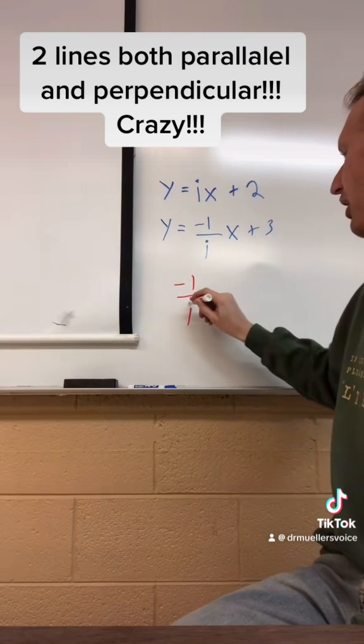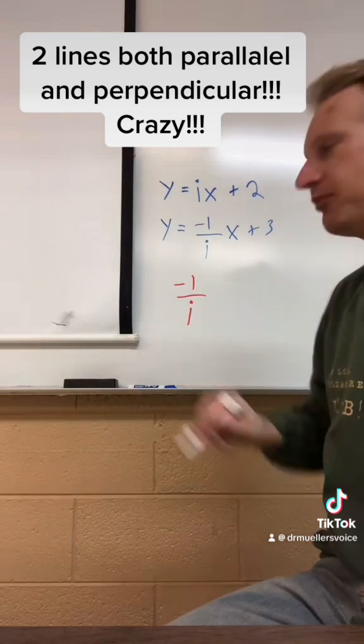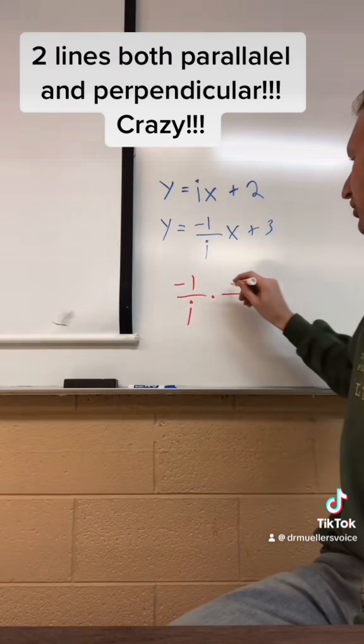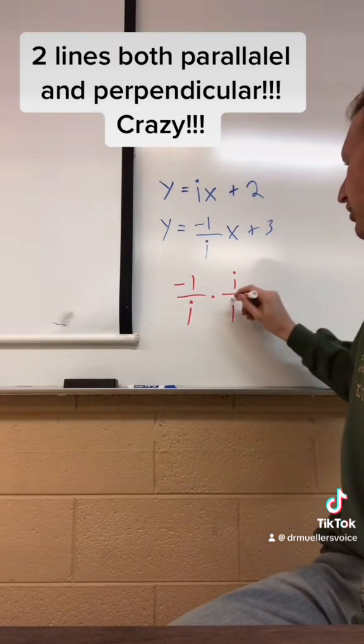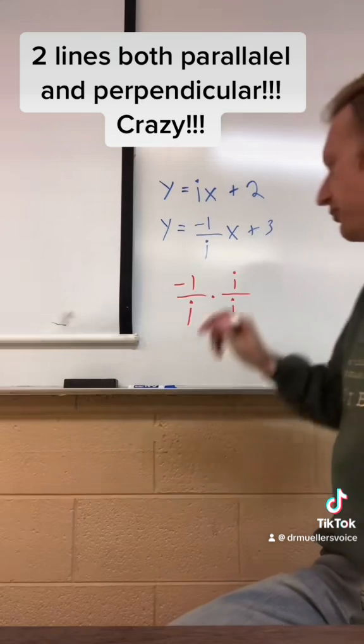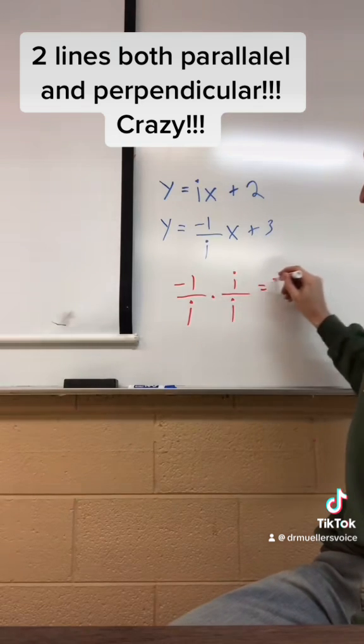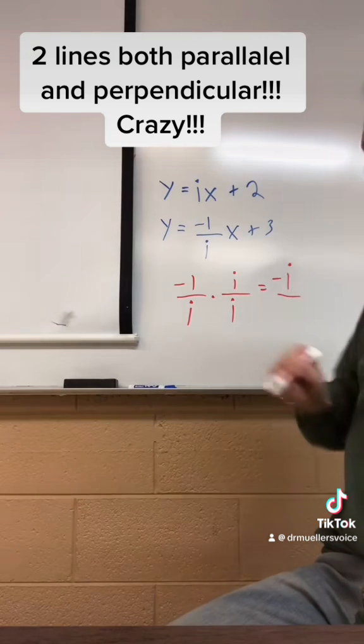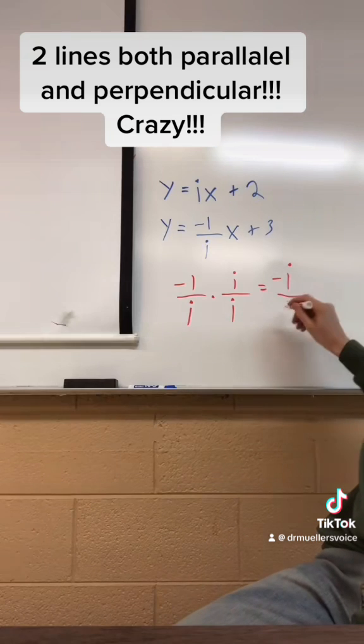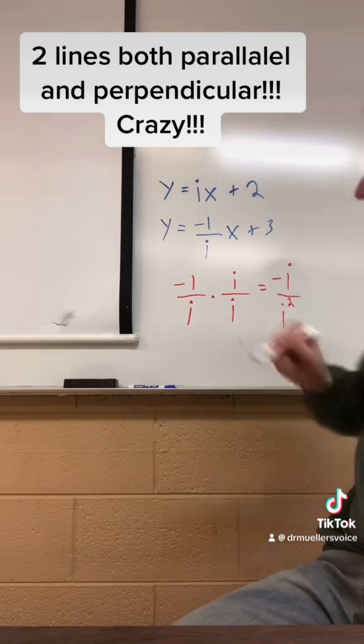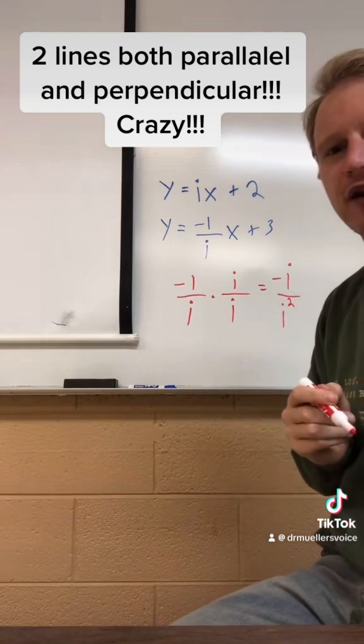If I take negative 1 over i and multiply it by 1, which is the same as i over i, right? That's 1. Then we get negative i over i times i, which is i to the second power. But what is i to the second power?